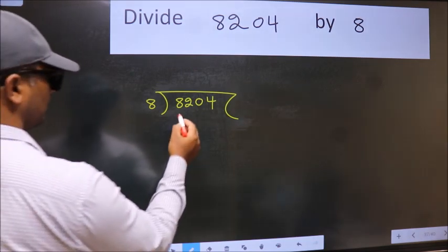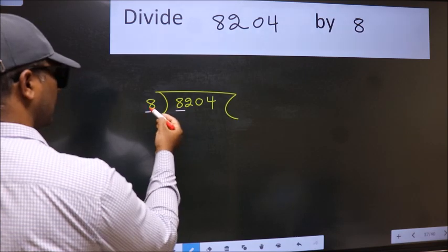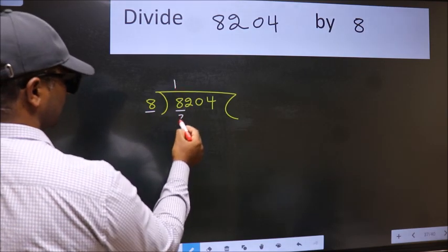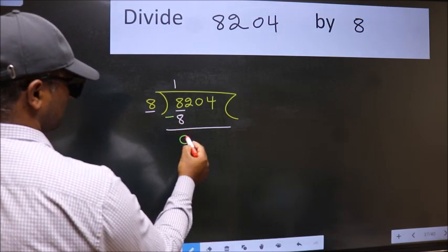Here we have 8 and here 8. When do we get 8 in the 8 table? 8 once is 8. Now we should subtract. We get 0.